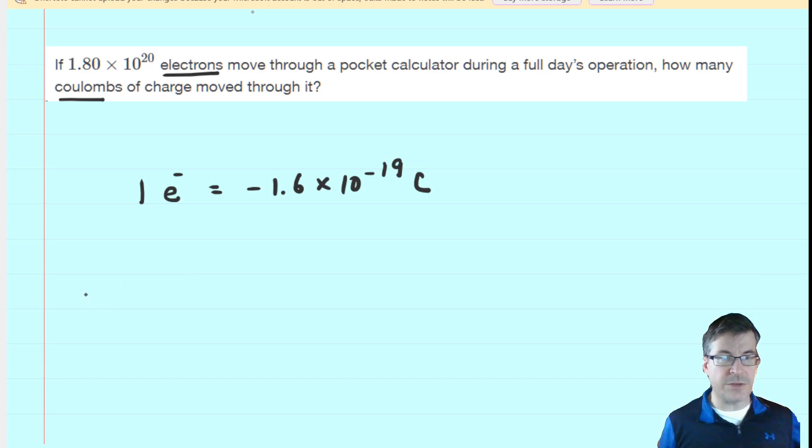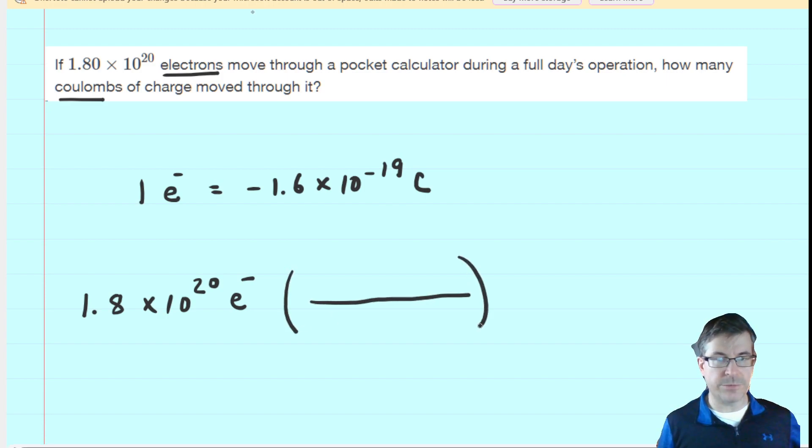At this stage, we can take the given quantity from the question: 1.8 times 10 to the power of 20 electrons. Then we're going to set up a conversion factor. You might want to pause the video and see if you can set up the conversion factor first. You're trying to cancel out the electrons so that your answer is left in coulombs.